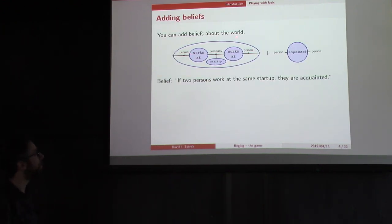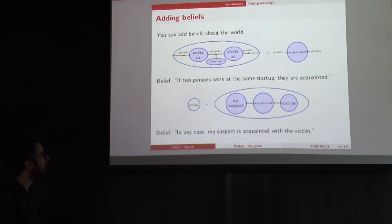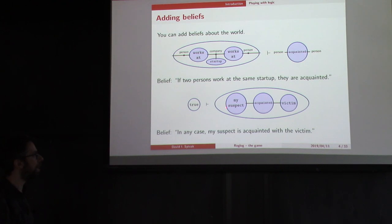You can add to the system beliefs about the world. So you can say, I believe that if two people work at the same startup, then they're acquainted. Works at is a relation between people and companies. Startup is a subset of companies. And so you can read this almost like a concept web or like an English sentence. You can look at this thing and imagine someone who doesn't know any logic just seeing person works at company, which is startup, which works at by another person, and that entails that the two people are acquainted.